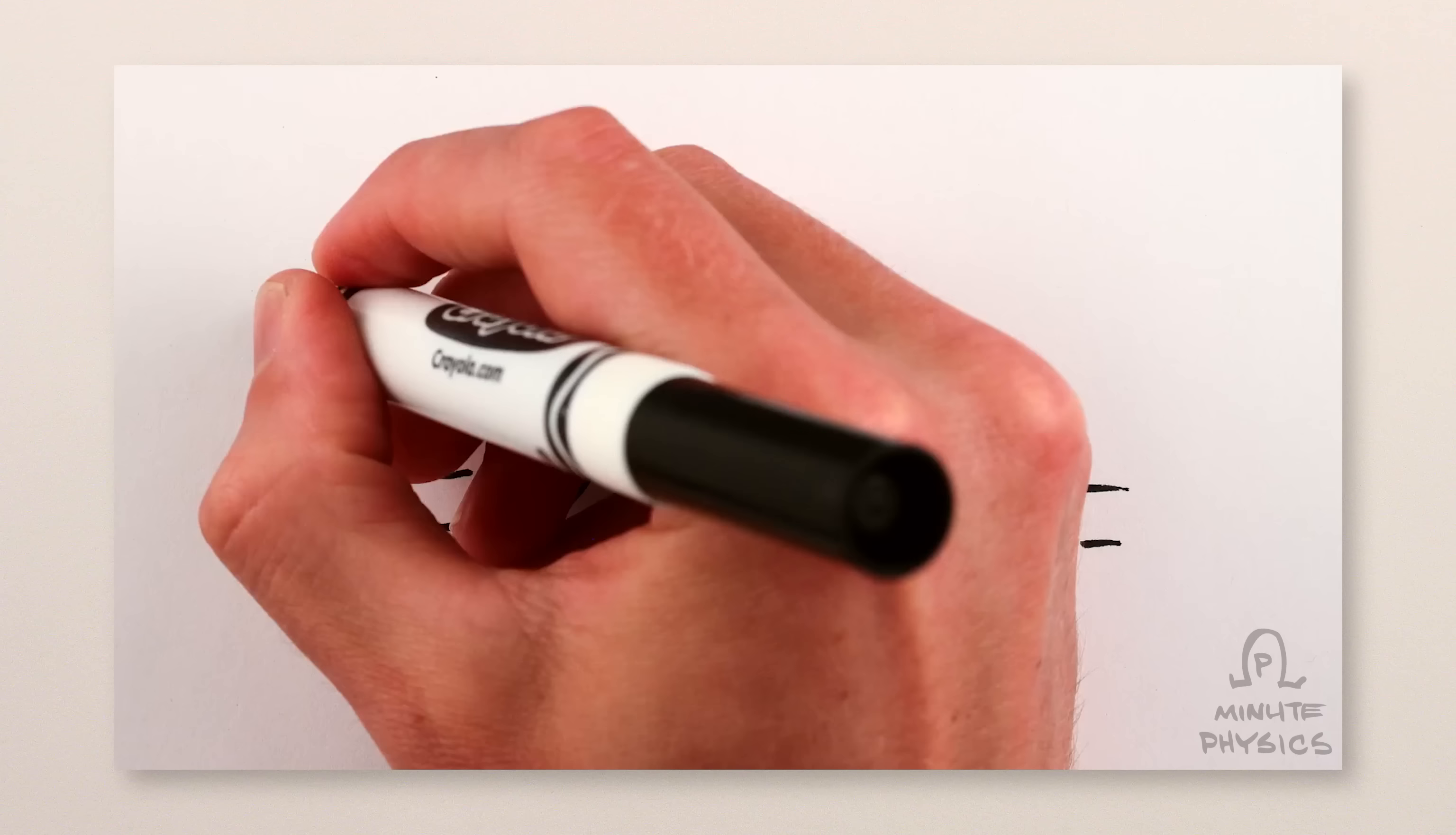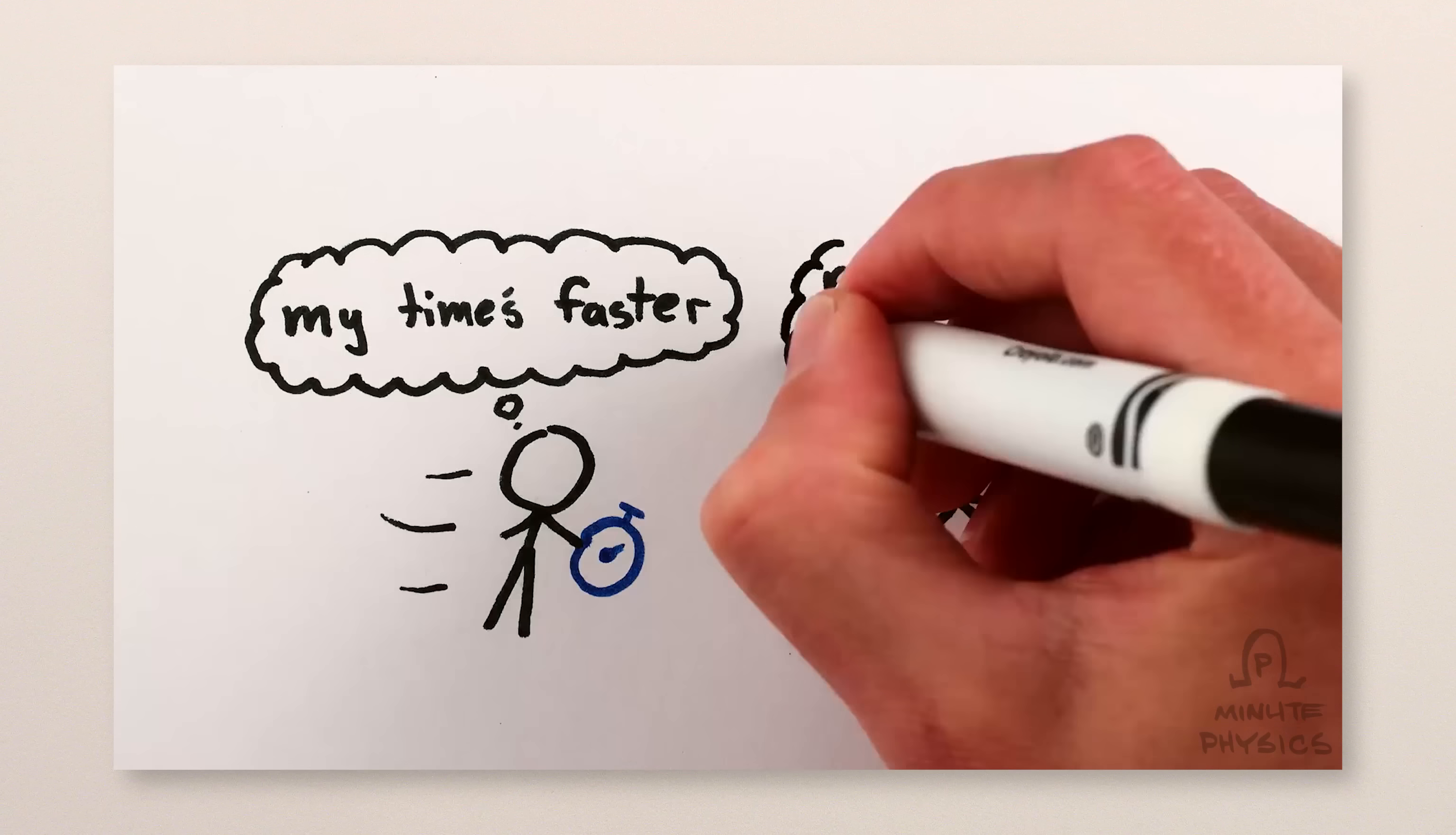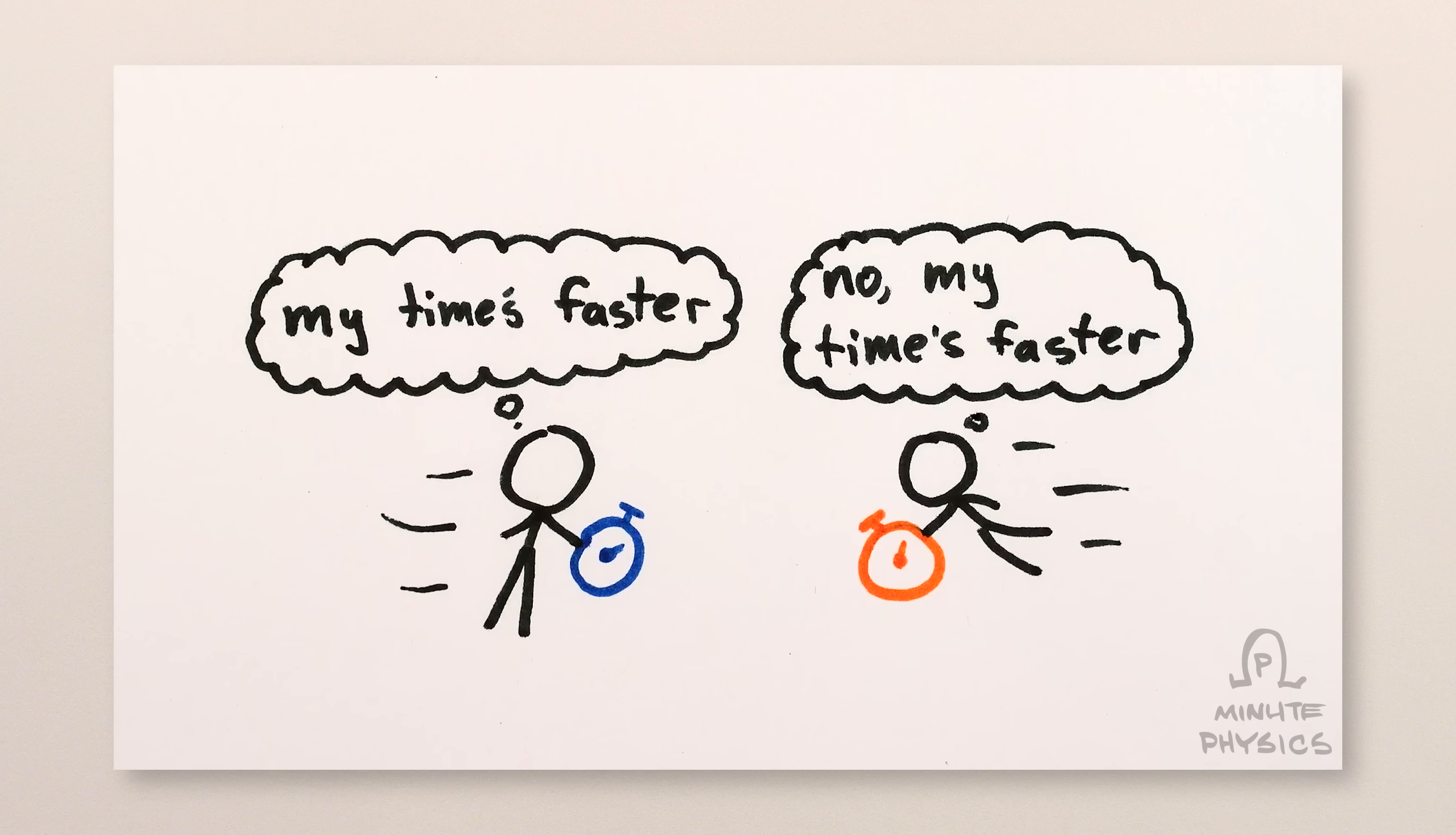If you're wondering how it can make sense that we both perceive each other's time as running slow, well I have another whole video on that, but in short, it's because our respective world lines, which correspond to our own time axes, are rotated relative to each other, and so we each only attribute a projection of the other person's world line's length as representing movement through time, and the rest as movement through space.